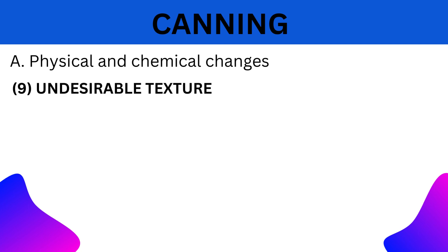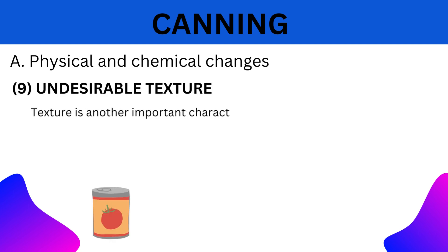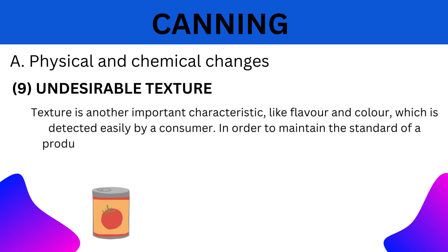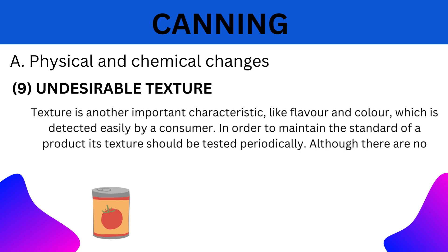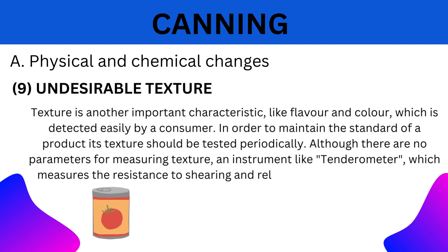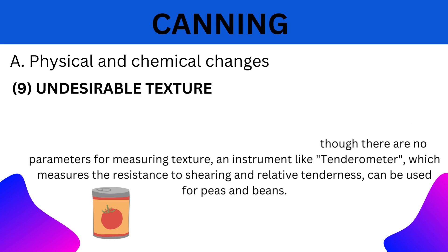9. Undesirable Texture: Texture is another important characteristic, like flavor and color, which may be detected easily by the consumer. In order to maintain the standard of the product, its texture should be tested periodically. Although there are no standard parameters for measuring texture, an instrument like a tenderometer, which measures the resistance of shearing and relative tenderness, can be used for peas and beans.